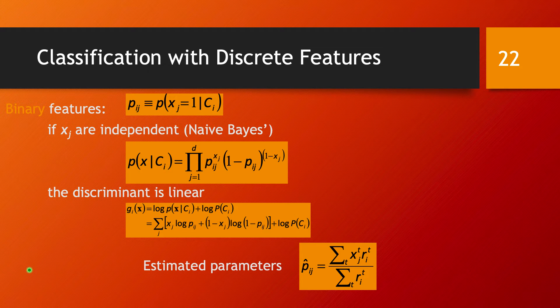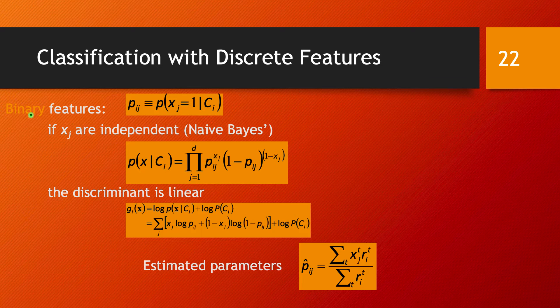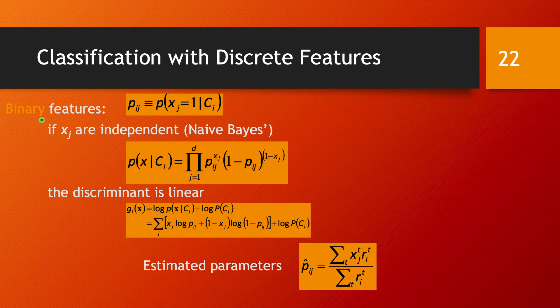To simplify the discussion, I'll consider first the case when we have binary features, so just two options for the value of that feature. Then on the next slide, we'll discuss the general case when we have an arbitrary but finite number of values for that feature.